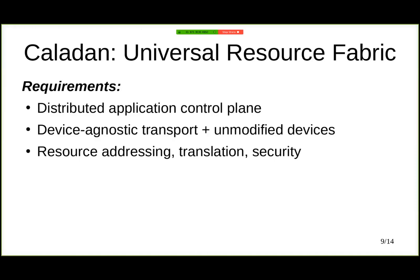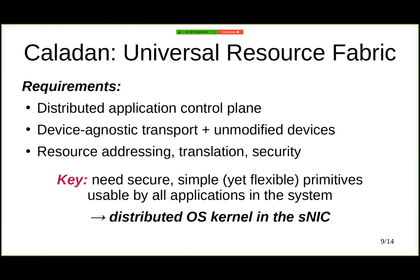While we could think of just moving applications into these SmartNICs on each of the nodes, if we have multiple applications in the system running on the SmartNICs, we are soon going to run out of processing cycles on the limited resources of the SmartNIC. So what we need is Caladan to offer secure, simple, yet flexible system primitives usable by all applications in the system. We are going to do this by deploying a distributed operating system kernel inside the SmartNIC.